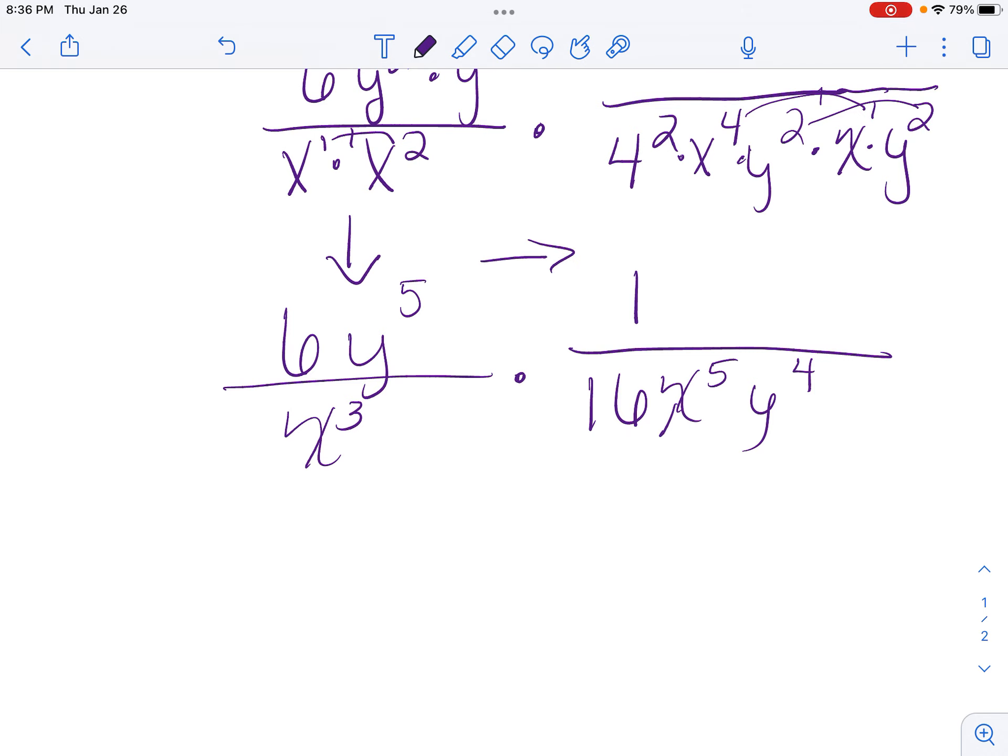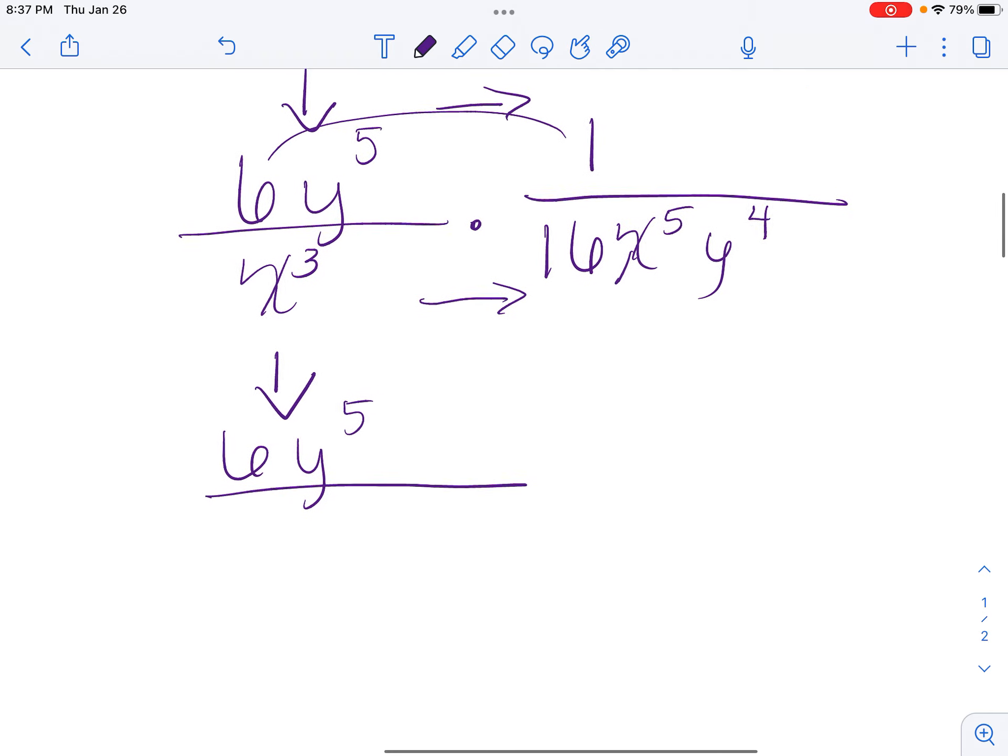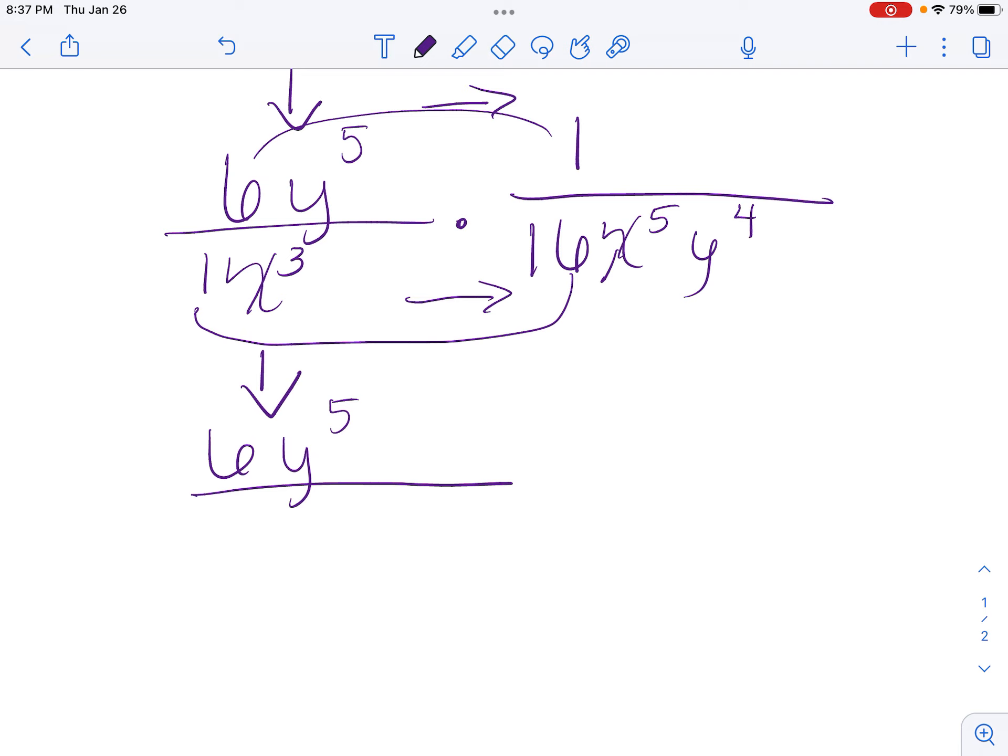Now I'm going to multiply across on top and on the bottom. So 6 times 1 is 6. Bring our y to the 5th power down. Then 16 times 1 is 16. Then I have x to the 3rd and then times x to the 5th. So I'm going to add the exponents. 3 plus 5 is 8. Then I bring my y to the 4th down.